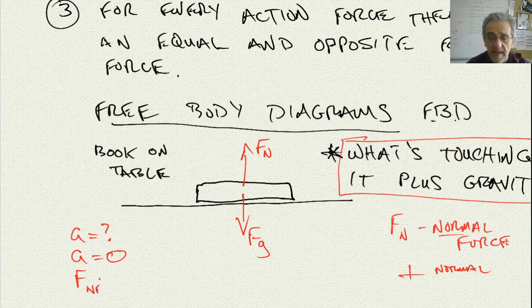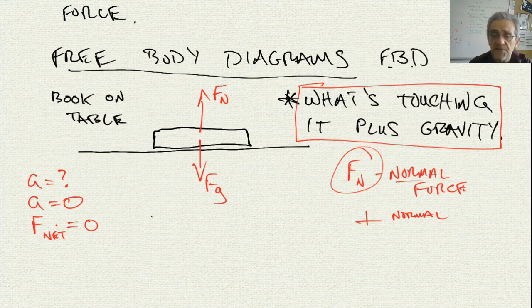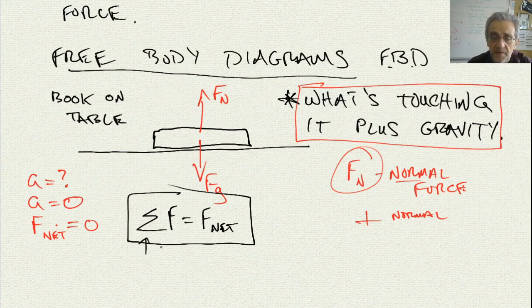So F_net must also equal zero. I'll write down the summation of forces — the sum of the forces is equal to the net force. That's the definition of net force. This symbol is the Greek letter sigma, meaning 'the sum of.' We'll assume that up is positive.